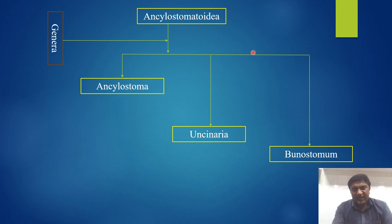The Ancylostomatoidea have the following genera: Ancylostoma, Uncinaria, and Bunostomum.